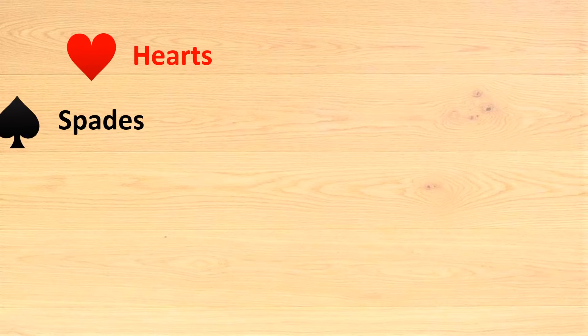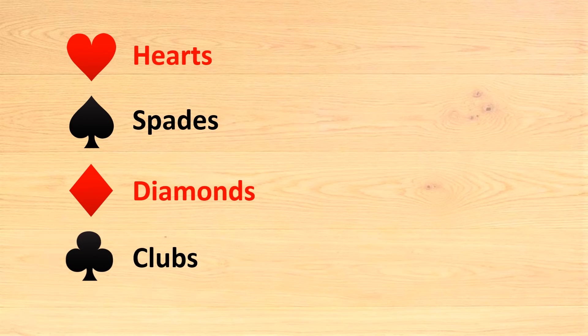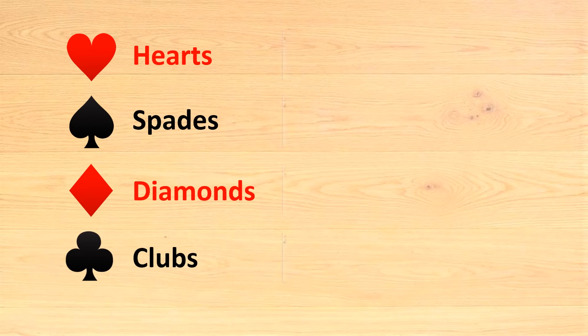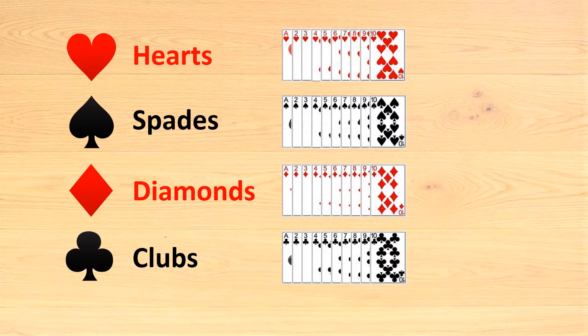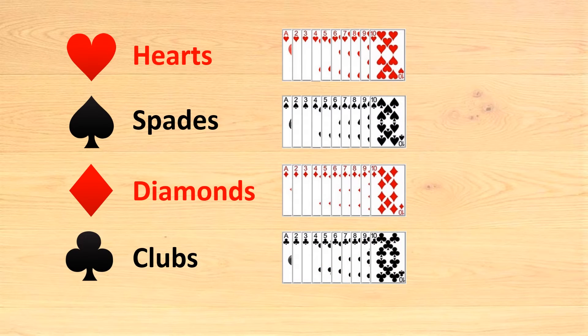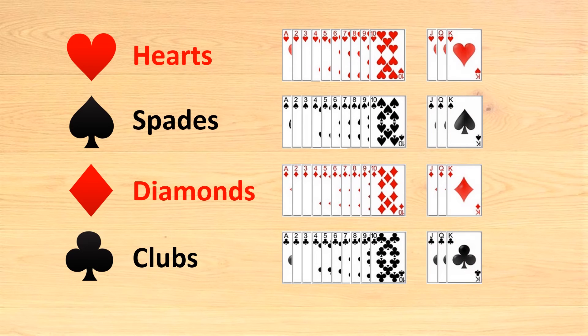I'm a big fan of card games, no matter if I play them online or with the kids. If you're just like me, then you know for sure that each deck of cards is made of 2 jokers and 52 cards, split in 4 suits: hearts, spades, diamonds and clubs. Each suit contains numbered cards from 1 to 10, plus 3 additional figures: the jack, the queen and the king.